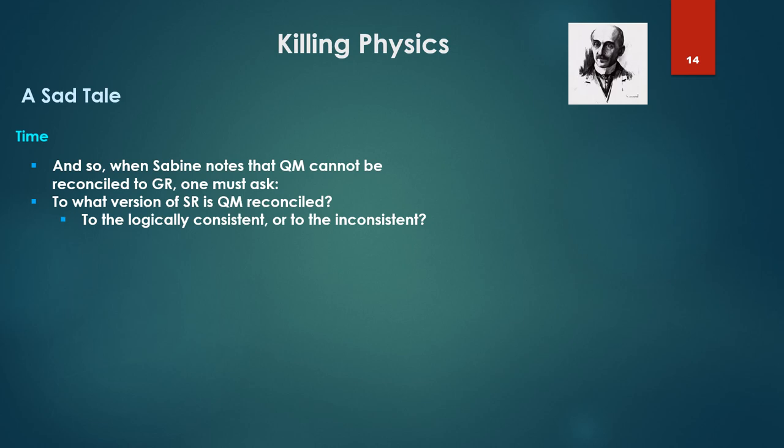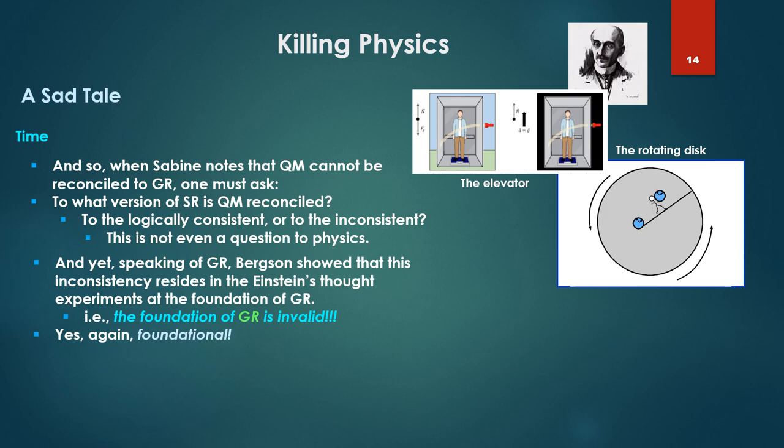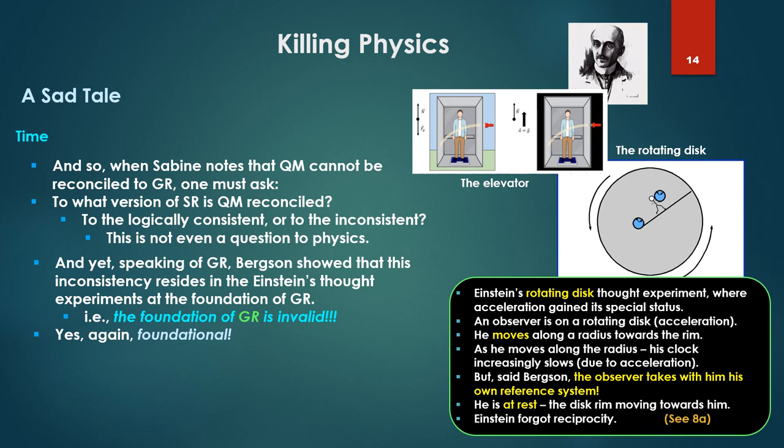Notice at the heart of the wave equation there, that e to the i pi. That is the Euler identity, which allows, in essence, an eternal reset to zero, as though we're unchanged. Once we go through the cycle, there's no change, there's no building, no permeation of one note into the next, etc. It's an abstract time at the heart of physics. And so as Sabine notes that quantum mechanics cannot be reconciled to general relativity, one was asked to what version of special relativity is quantum mechanics going to be reconciled? To the logically consistent or to the inconsistent? This is not even a question to physics. It's amazing. And yet speaking of general relativity, Bergson showed that this inconsistency resides in Einstein's thought experiments at the foundation of general relativity. That is, the foundation of general relativity is invalid. Yes, again, foundational: those thought experiments, the elevator, the rotating disc.